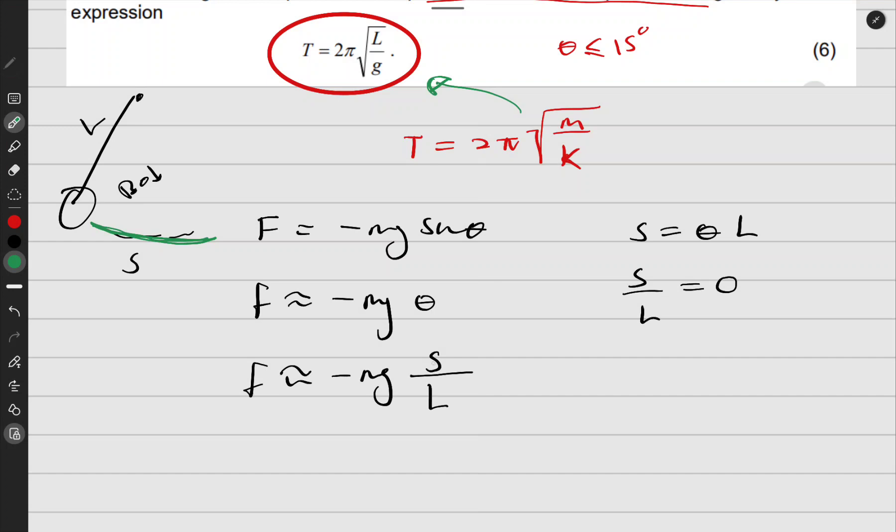So I can write this as negative mg over L times s. This now looks like the formula that we know, which equals negative kx for simple harmonics, where this is the constant and this is the displacement.